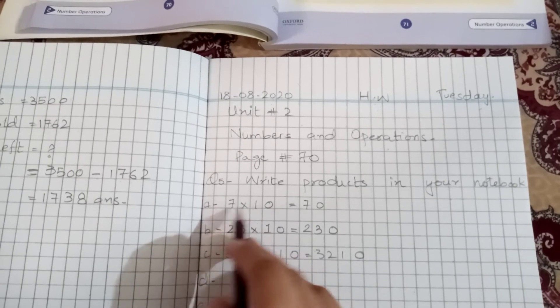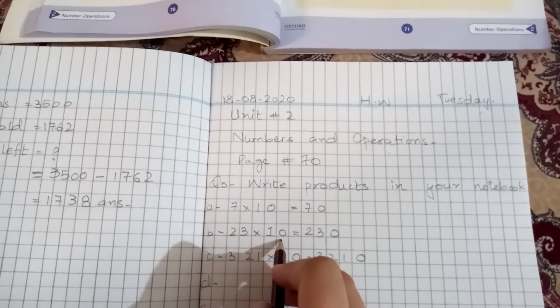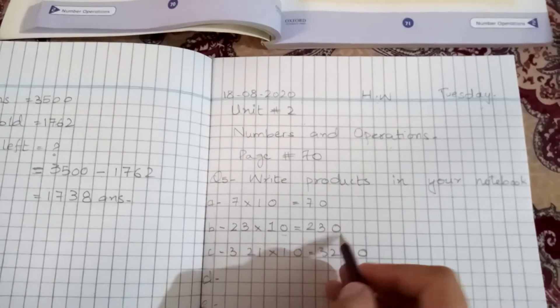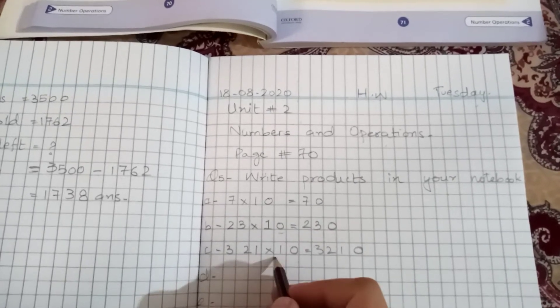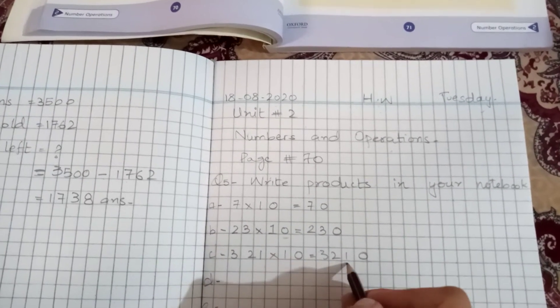7 multiply by 10 is 70. If you have a direct multiplication, 23 multiply by 10 - if you add a 0, it will be 230. If you add a 0, it will be 3,210. Right? The remaining parts are the same.